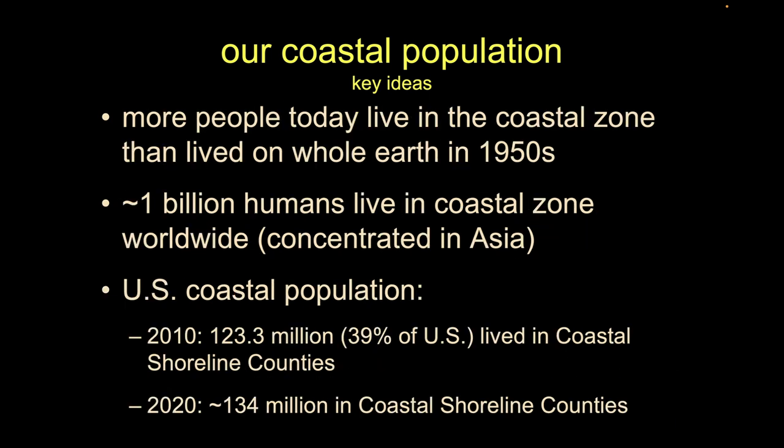That's about a billion people roughly overall. Our coastal population is large. In 2010, using a political definition — which is easy because you can just grab those numbers really quickly from the U.S. Census — if we just say counties that touch the ocean and add that up, that's 123 million people, more than a decade ago. Now that same number is up to about 134 million people just in the U.S. alone.